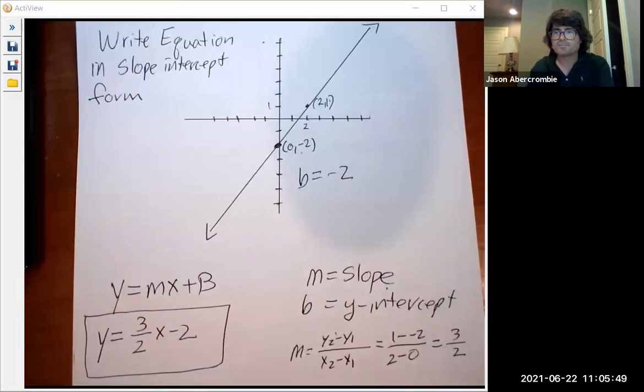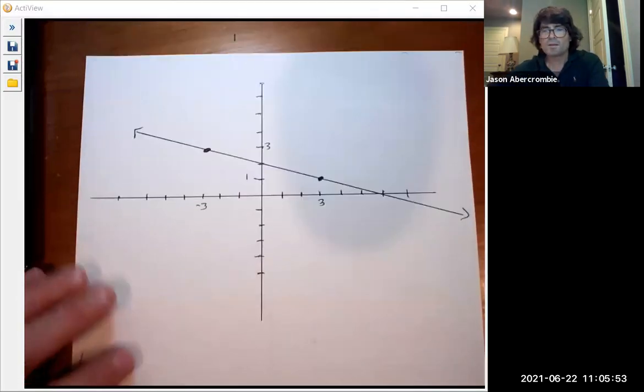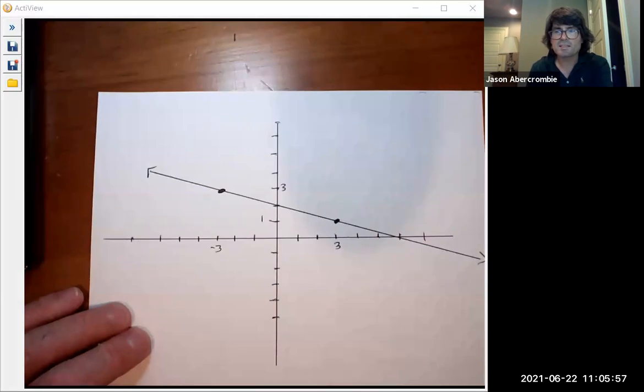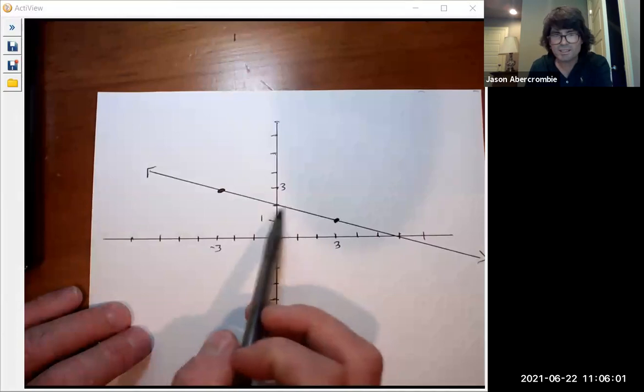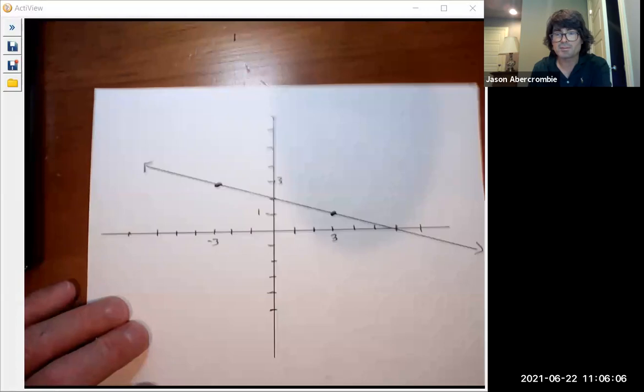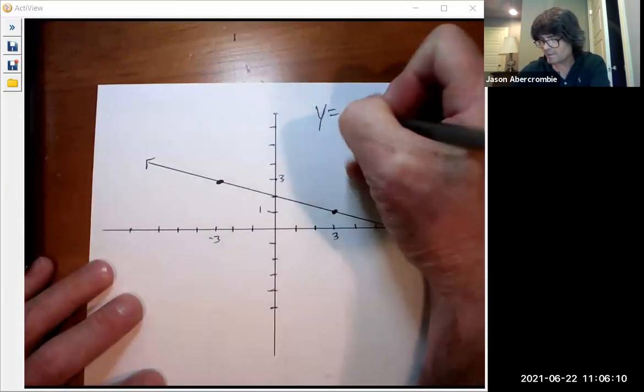So let's try another example. Okay, in this graph we have two points but we don't explicitly see the y-intercept. I can kind of tell it's probably going to be 2, but I don't know for sure. So we're going to actually solve for the y-intercept in this example. I'll show you how that works. Let's go ahead and write down y equals mx plus b again.